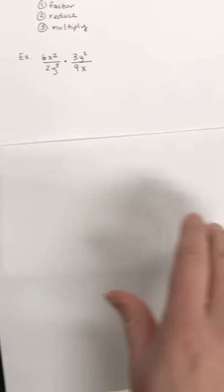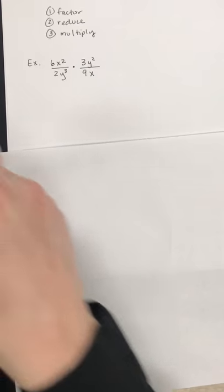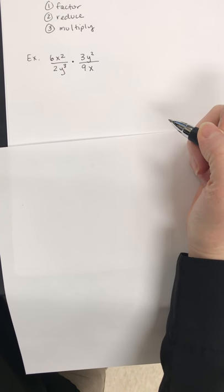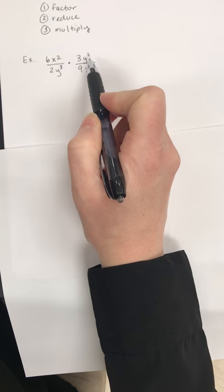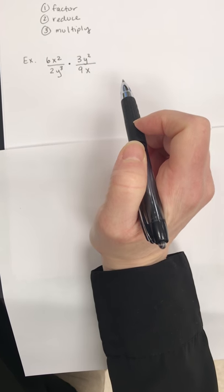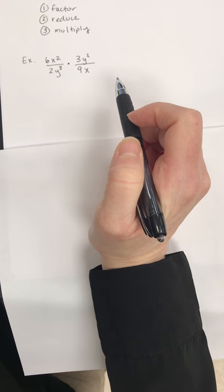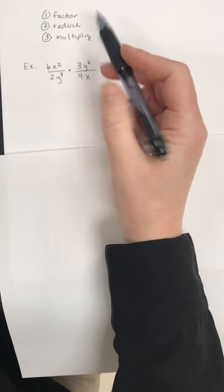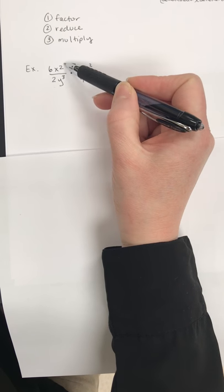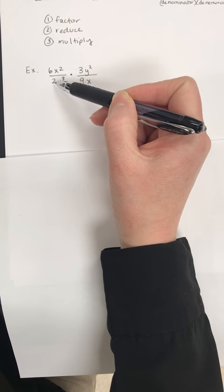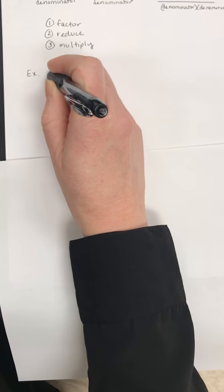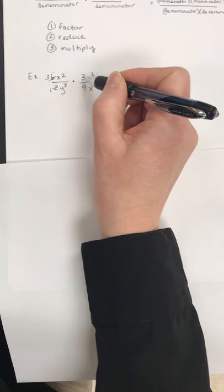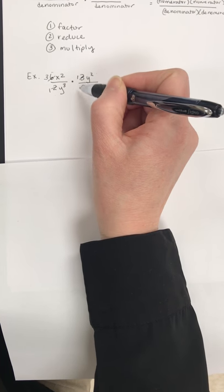If I had 6x squared over 2y cubed times 3y squared over 9x, I could just multiply numerator times numerator, denominator times denominator. But it's going to save me reducing with bigger numbers in the end if I reduce first. So I can reduce this fraction, which 6 over 2 reduces to 3 over 1. I could reduce this fraction. So 3 over 9 is going to be 1 over 3.